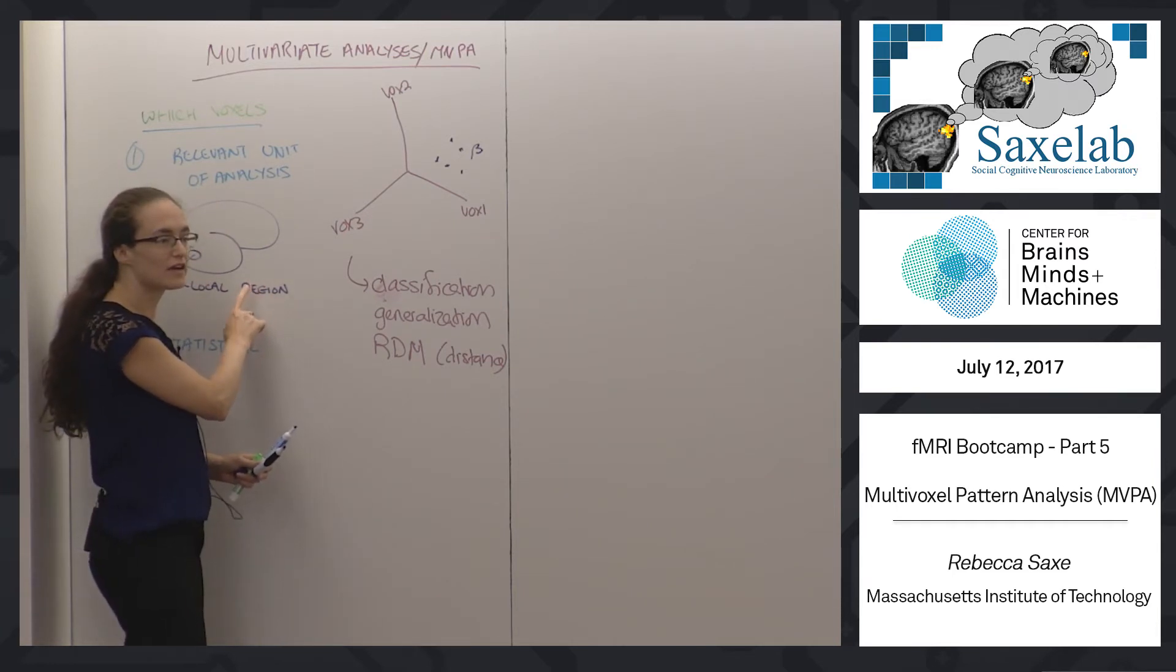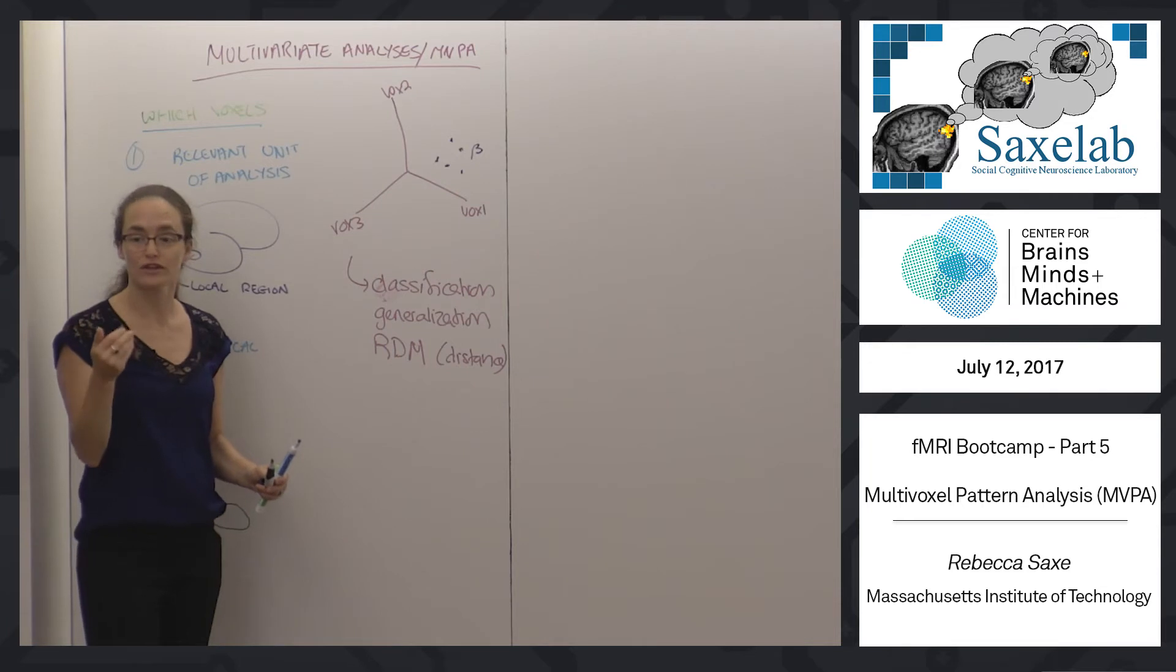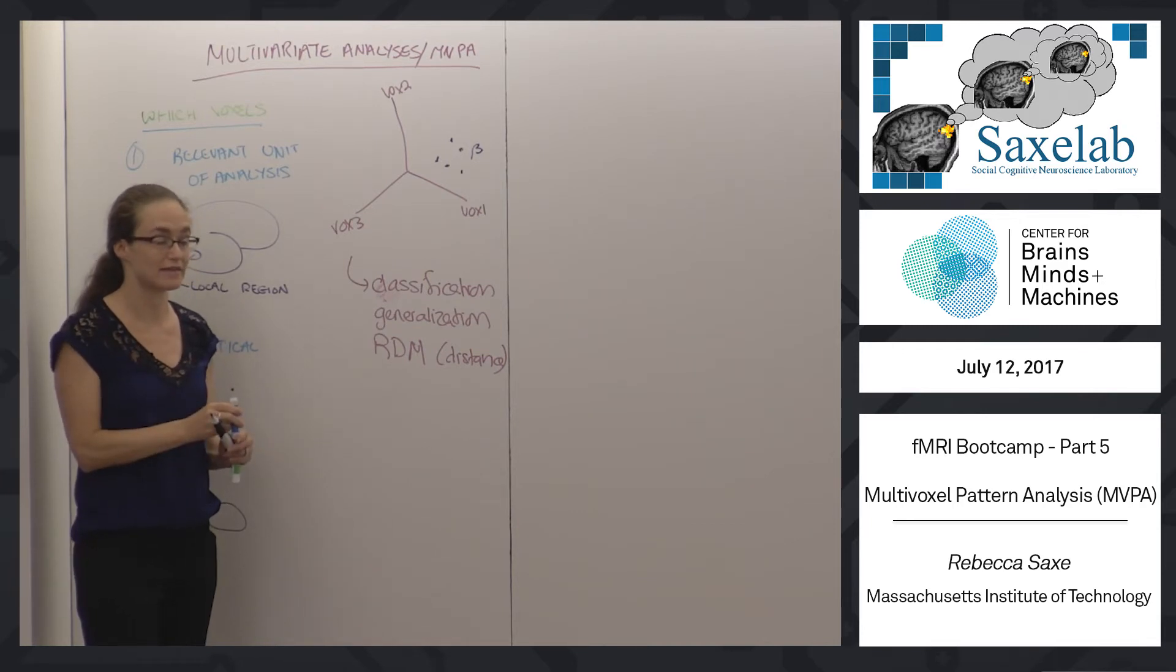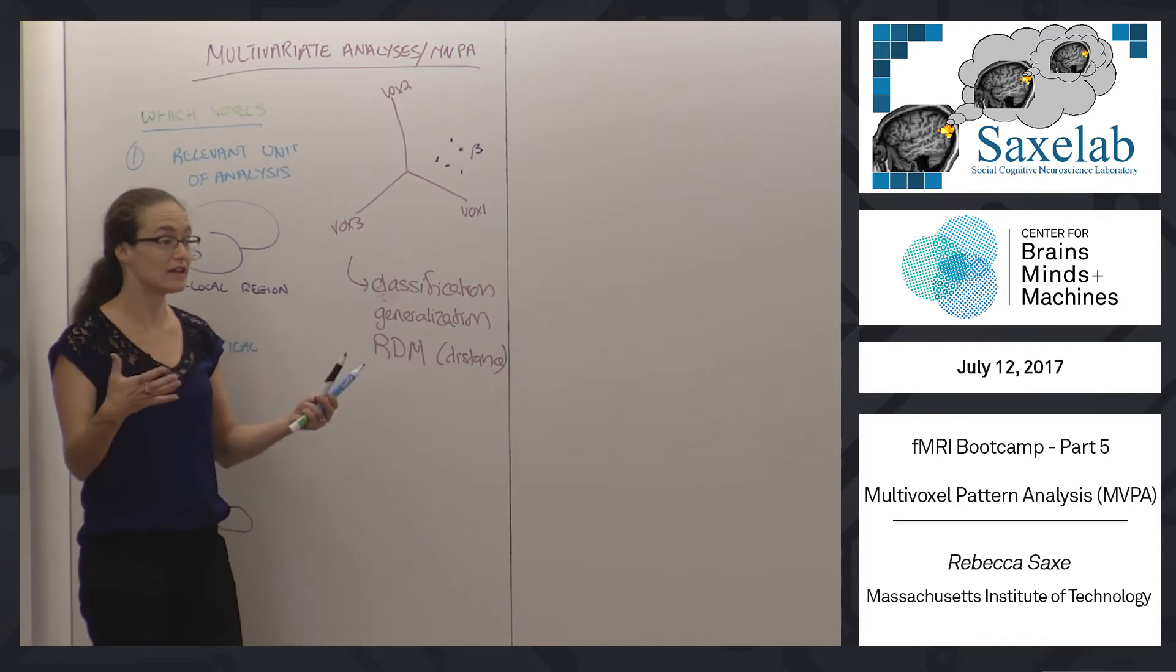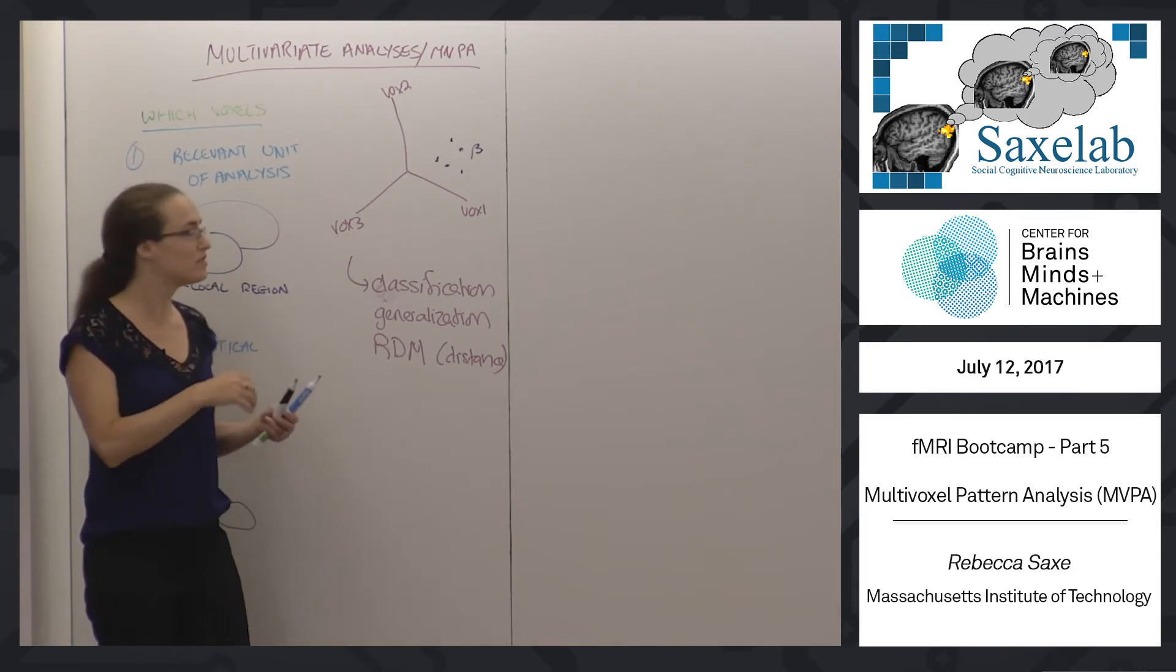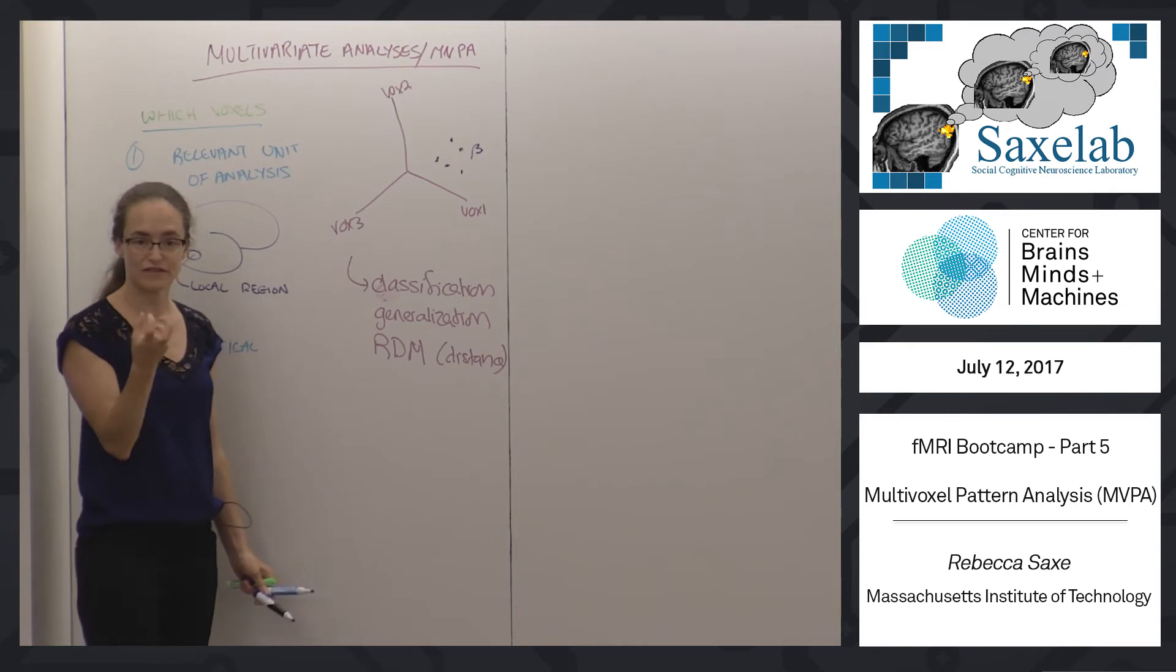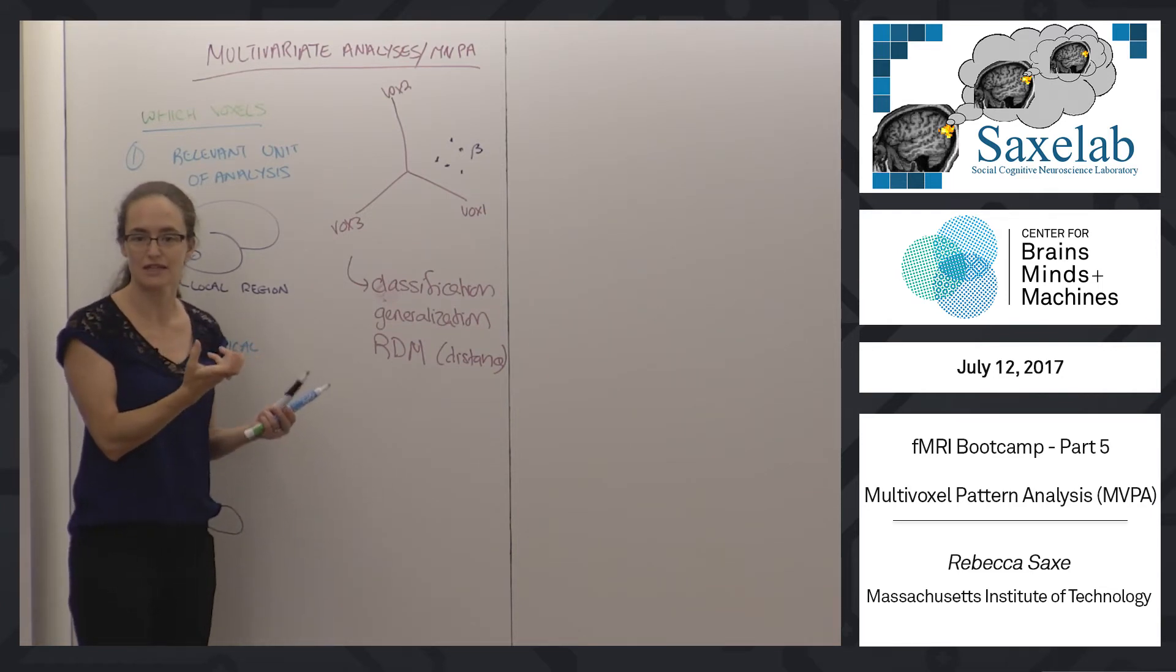When you do the kind of searchlight we talked about, where you iteratively look for information in each searchlight that you move all the way around the brain, you're looking for local information. I think that's intuitive if you think about the brain as made up of areas or regions. If you think the cortex is organized with local neural populations that work together to encode some feature space, then it's interesting to ask what feature space it encodes.